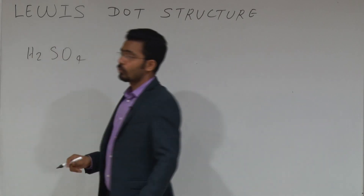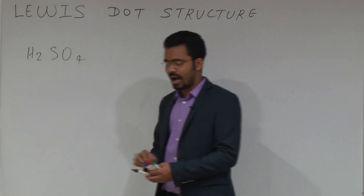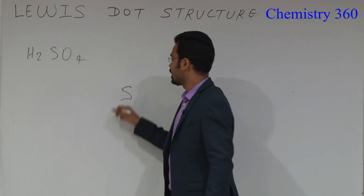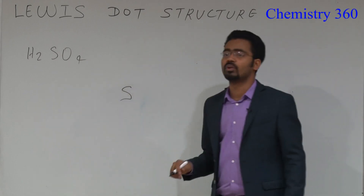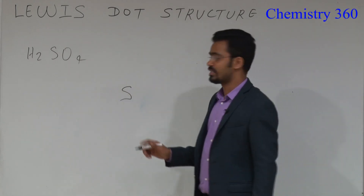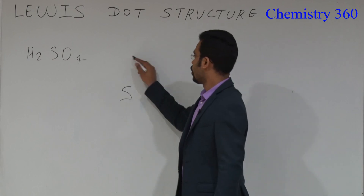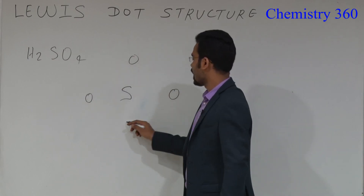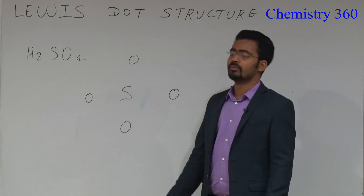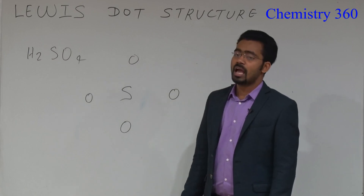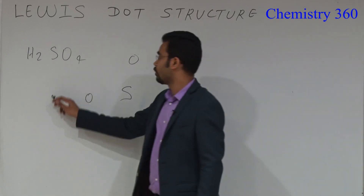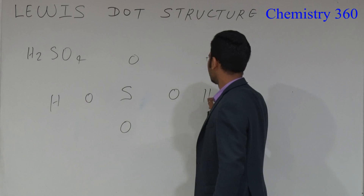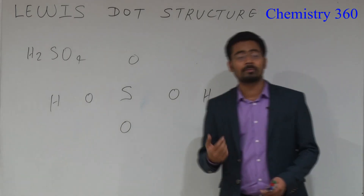For H₂SO₄, first identify the central atom. Sulfur is the central atom. Put the remaining atoms symmetrically: oxygen, oxygen, oxygen, and oxygen, and you know that 2 hydrogens are also present. So hydrogen will attach with oxygen. First start from the external atom, not the central atom.